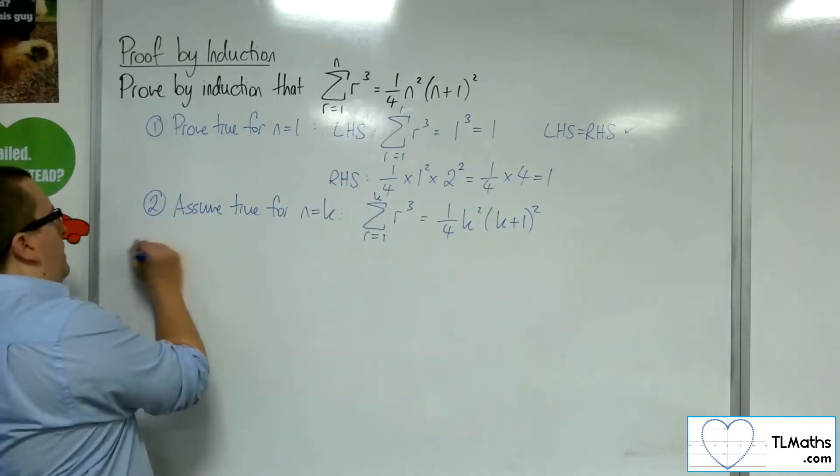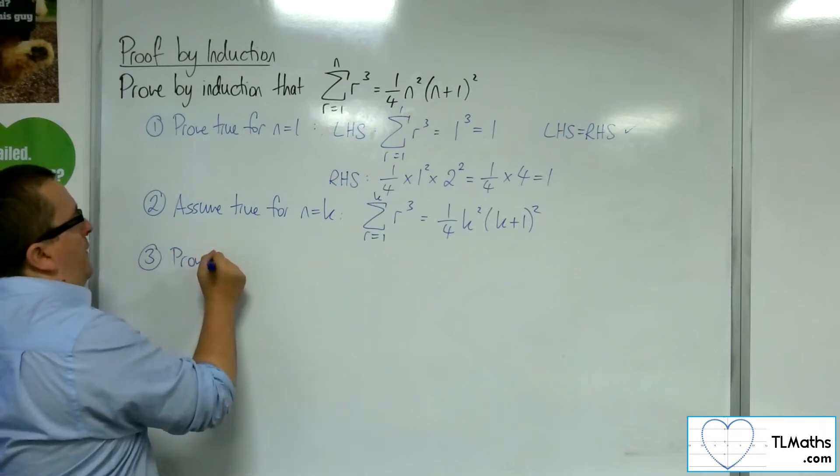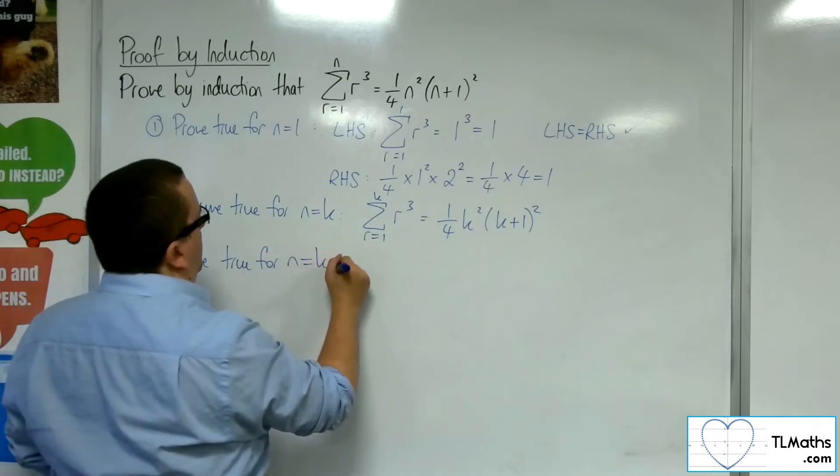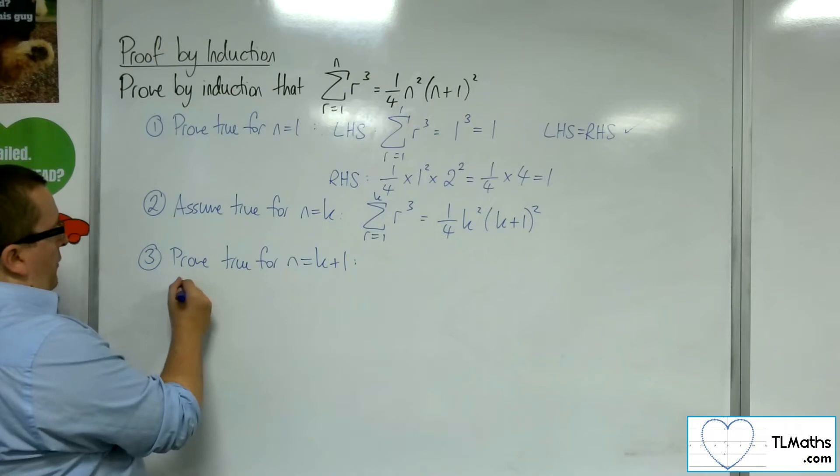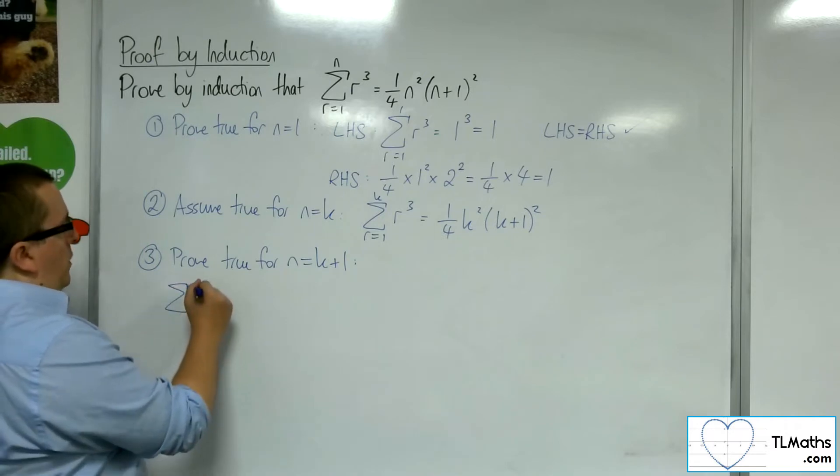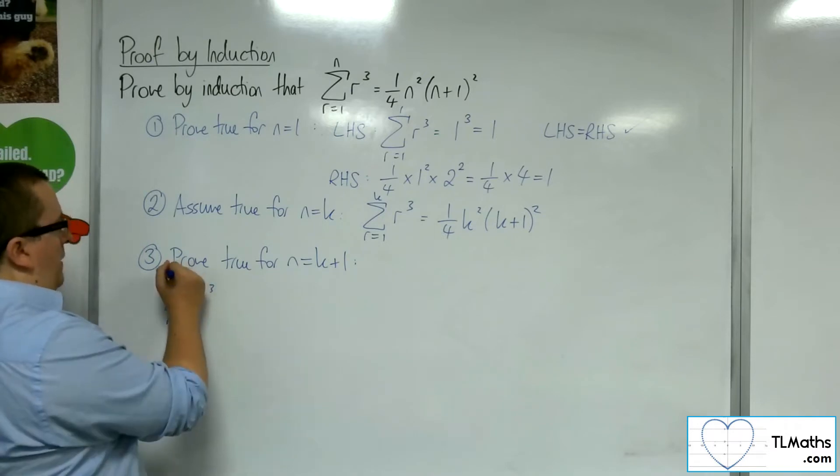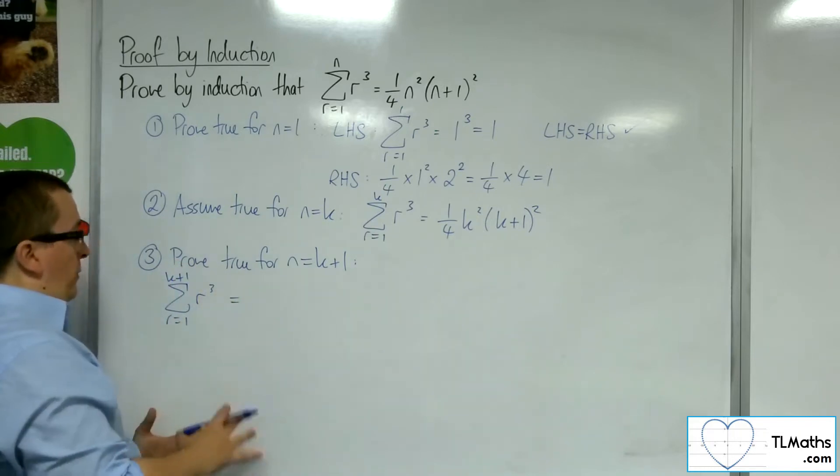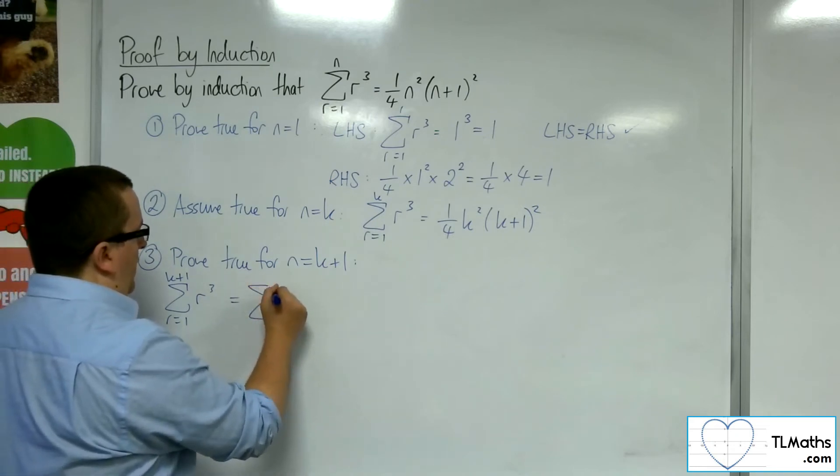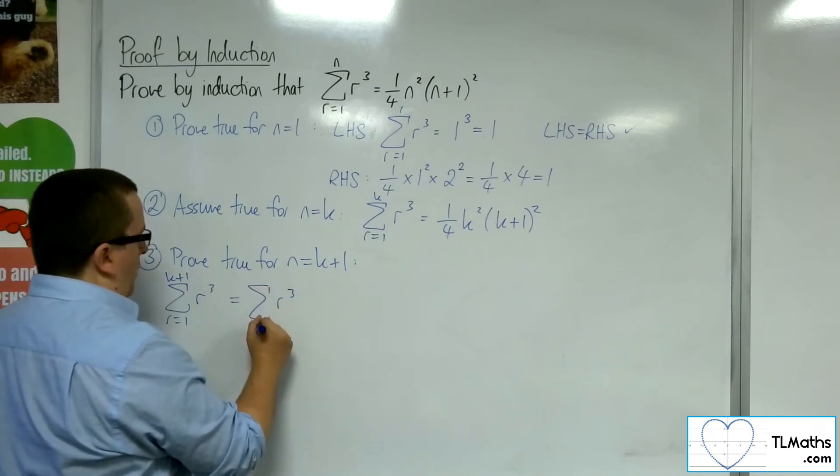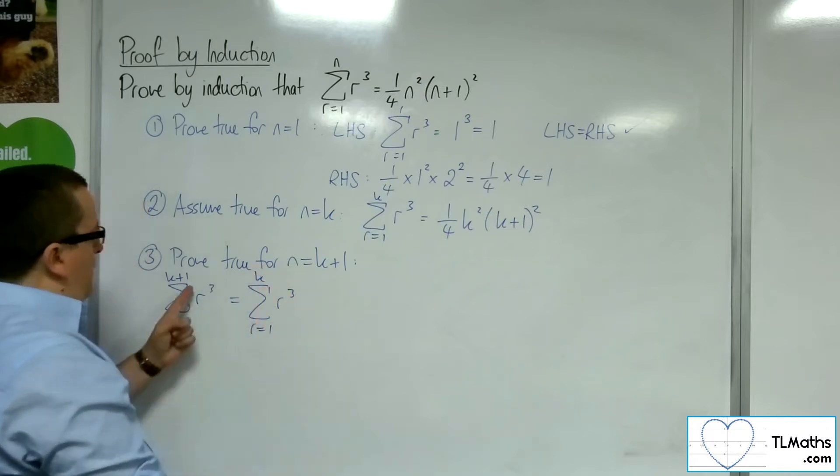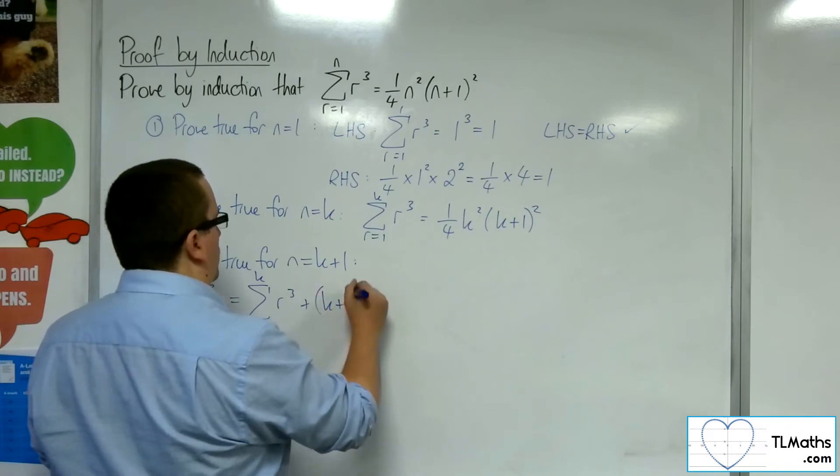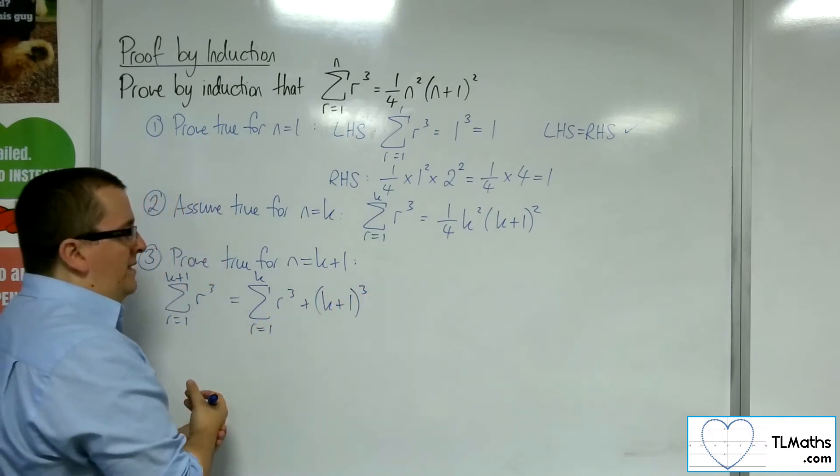Step 3. Assuming that it's true for n equals k, we're going to prove true for n equals k plus 1. So we want to find the summation of r cubed from r equals 1 up to k plus 1. Now, splitting the summation as we've been doing, we can write that as the sum for 1 up to k, and then we've got that extra term, the k plus 1 term. So substitute that in, and I get k plus 1 cubed.